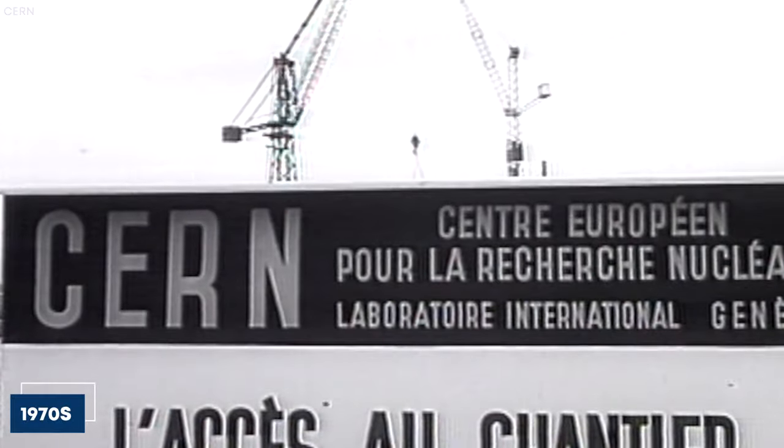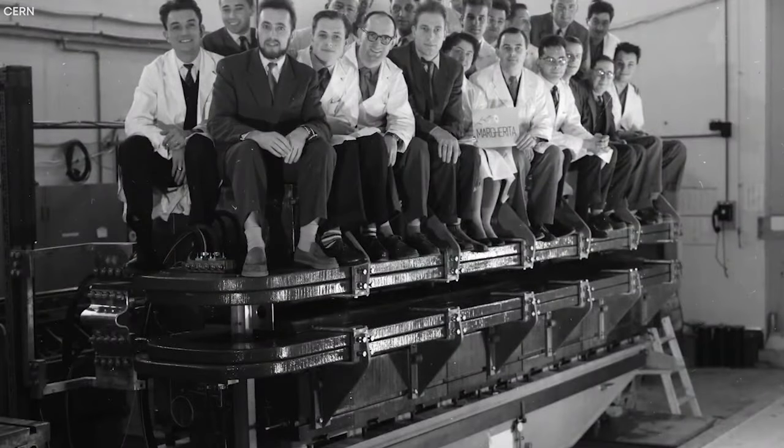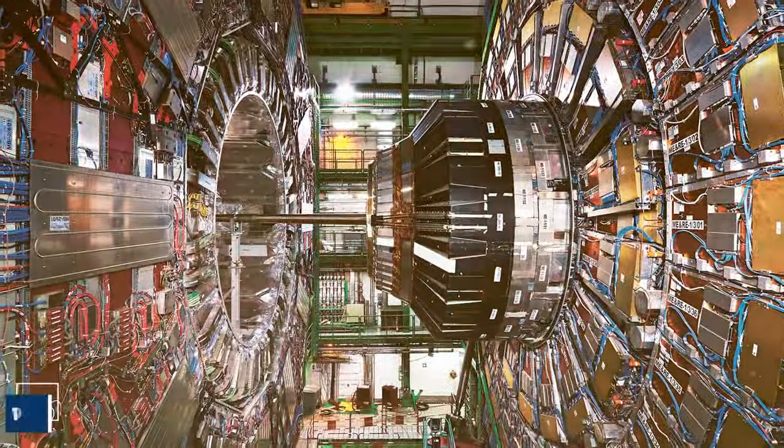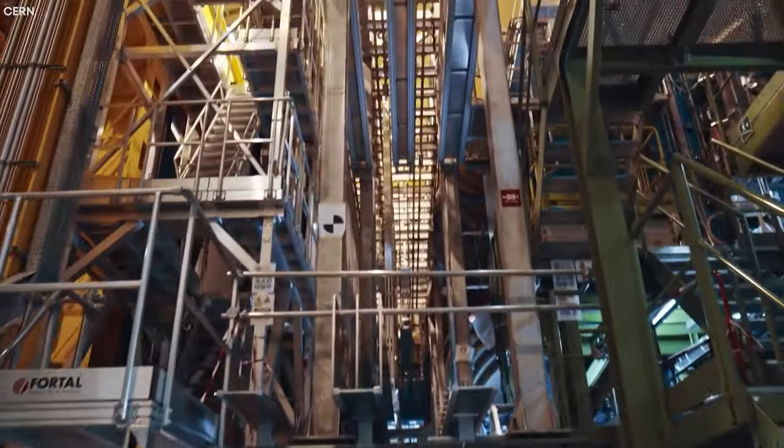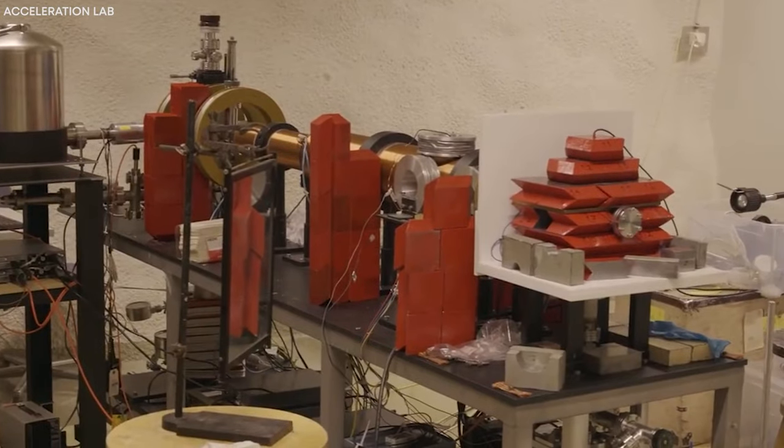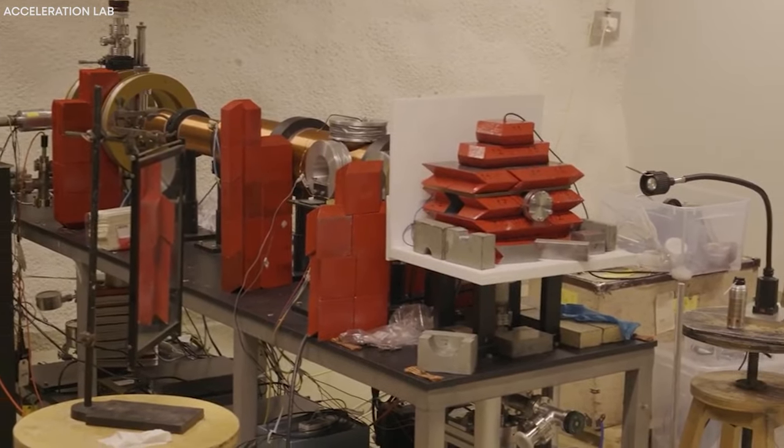In the 1970s, CERN began developing the Large Electron-Positron Collider, which became operational in 1989. LEP was the most potent electron-positron collider of its time and was used to investigate a wide range of particle physics phenomena.